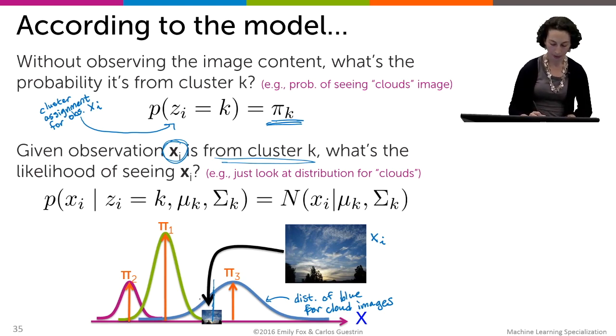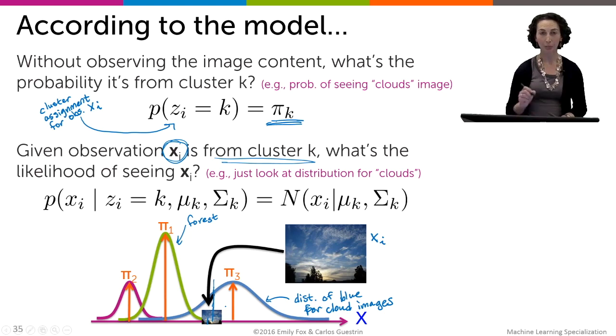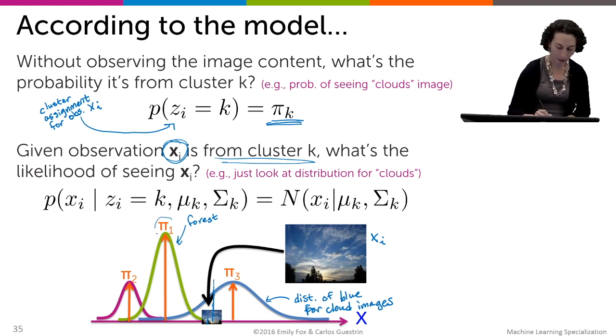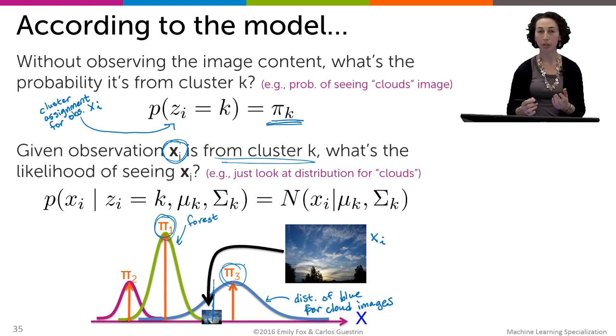But I can also look at this probability under the forest category and say, what's the likelihood of this image under the forest category? Well, it's not that high. But on the other hand, what we know is that there are many more forest images in our data set than cloud images. So when we're going to form our soft assignments, we're going to be thinking about weighting these two terms.